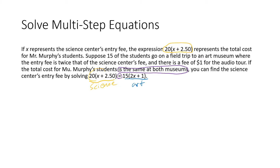On the art museum side, we were told 15 students go — versus 20 students at the science center. The entry fee is twice, so 2 times X. Plus the one dollar audio fee. So X is simply the entry fee, and that's what we're trying to solve for. If we set that up as an equation where both sides are equal, we can now start to do some work.